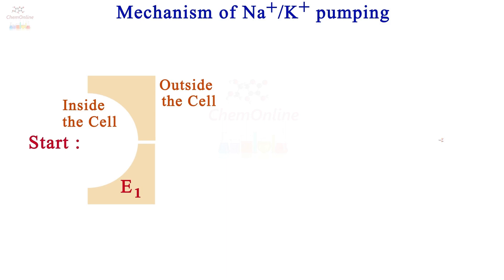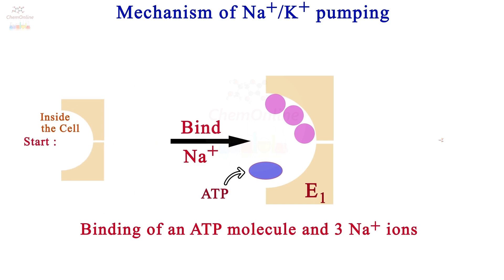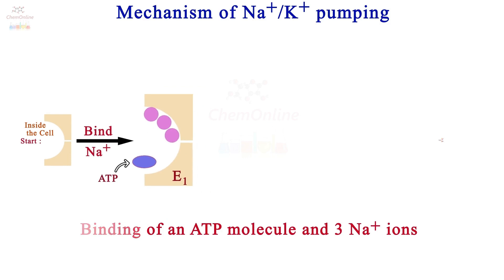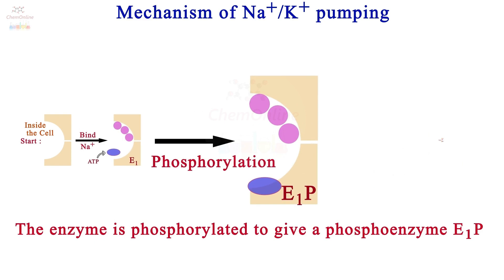Now let's discuss the mechanism of the sodium potassium pump in detail, starting from the interior of the cell. E1 represents the membrane-bound enzyme adenosine triphosphatase (ATPase). E1 has a high affinity for sodium ions compared to potassium ions. The first step is the binding of an ATP molecule and three Na+ ions from inside the cell. The enzyme is then phosphorylated to give a phospho-enzyme E1P, in which ATP is hydrolyzed to ADP leading to phosphorylation of the enzyme.